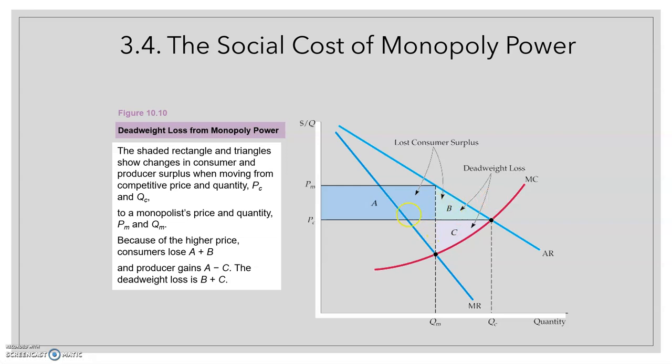As a conclusion, the monopoly is going to cause an inefficiency compared to perfect competition. This deadweight loss, B and C, is the social cost of this inefficiency that we have here.